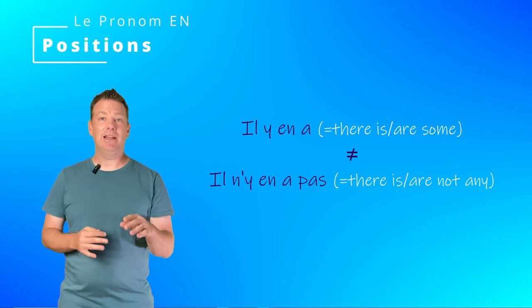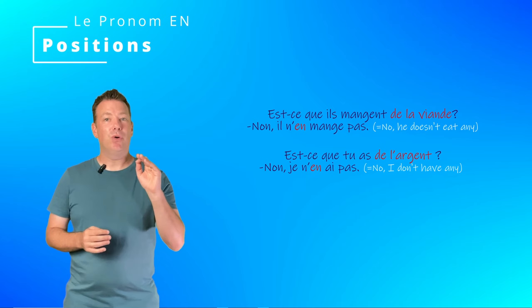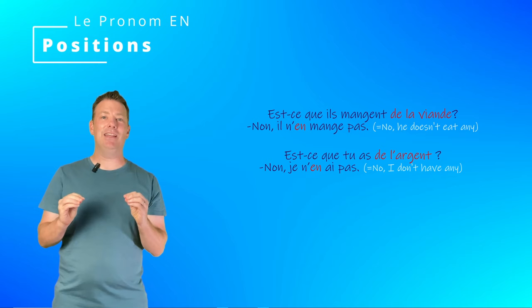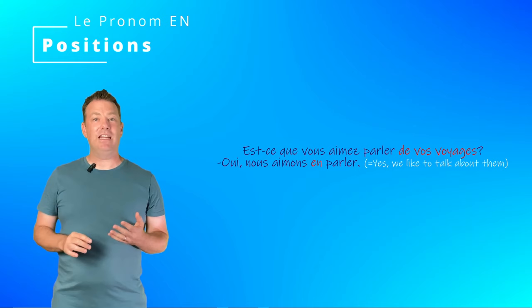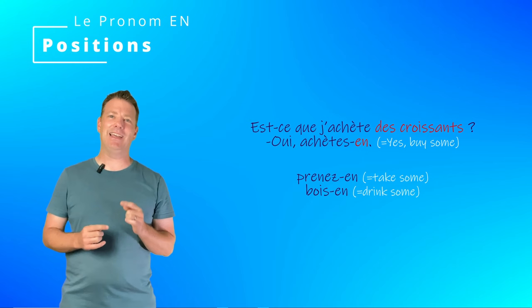EN is included within the negation — for example: Non, il n'en mange pas. The EN pronoun sticks right in front of the verb, even within the negation. In an infinitive construction, EN comes before the infinitive, as in: Oui, nous aimons en parler. In the imperative affirmative, EN comes after the verb and is linked to it by a hyphen in writing and a liaison in speaking.